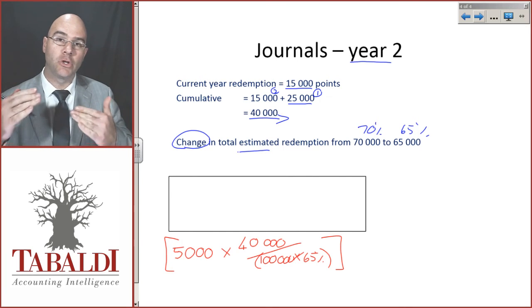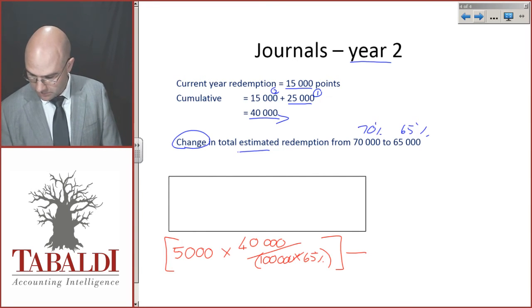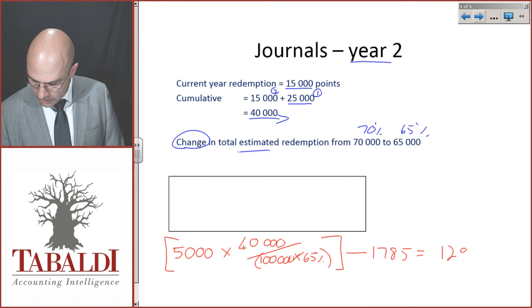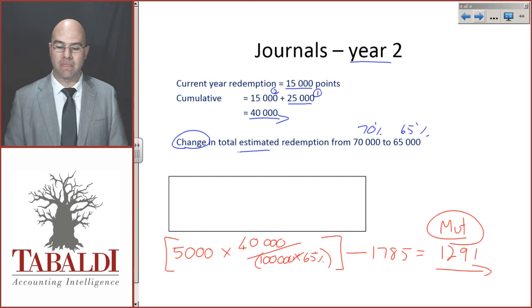I have to remove from that last year's balance and all the movements up to the year, 1,785, which gives me the 1,291 movement for the year.